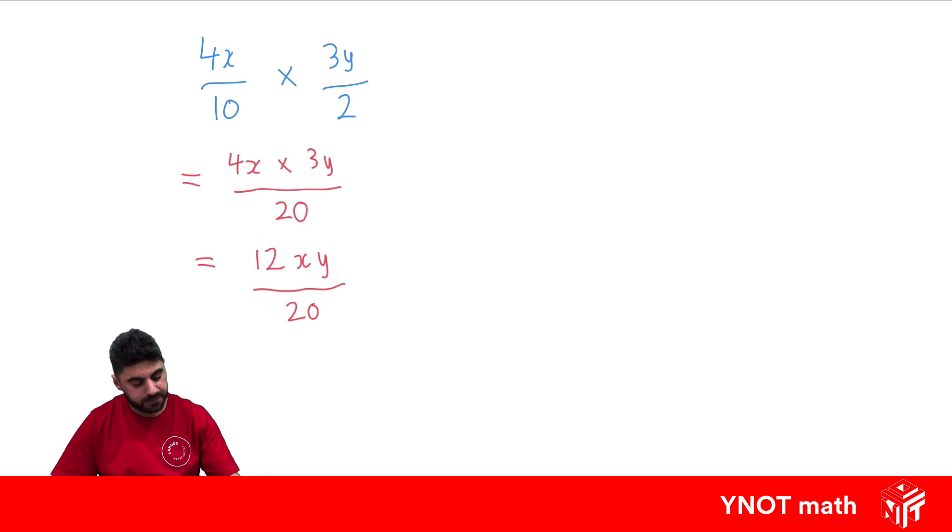This can be simplified a little bit because we can divide both of these by 4. 12 divided by 4 is going to give us 3xy and 20 divided by 4 is 5. So our final answer is 3xy over 5. We could have simplified this fraction up here straight away by dividing both of these by 2 or even diagonally dividing both of these by 2. You would have got the same answer.